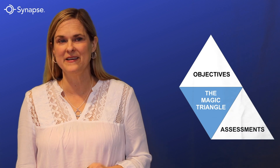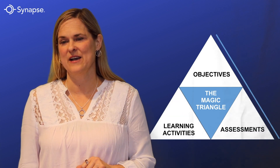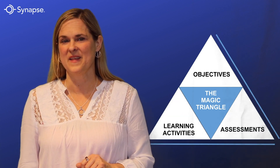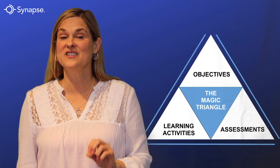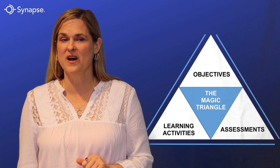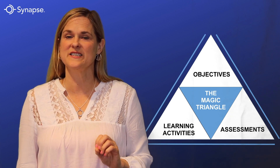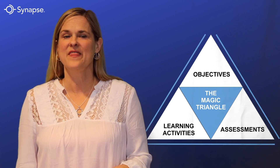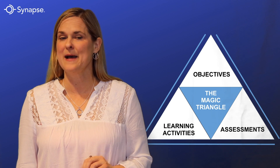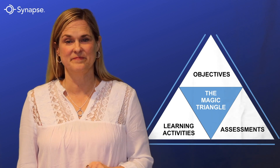If one or more of these components isn't optimal, then learners become discouraged, confused, bored, and unhappy — and it obviously negatively affects the learning outcomes. A key factor to consider with this model is that if one side of the triangle is missing, then learning collapses and is not effective.